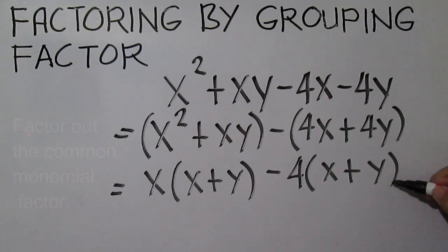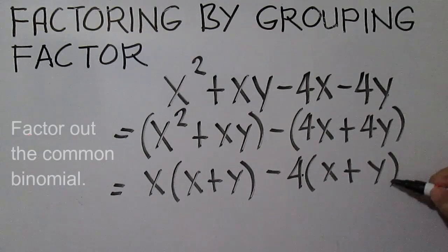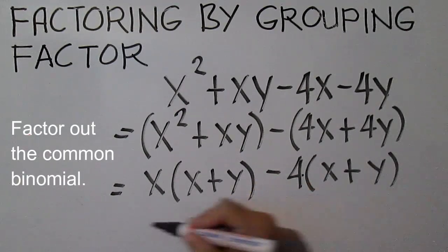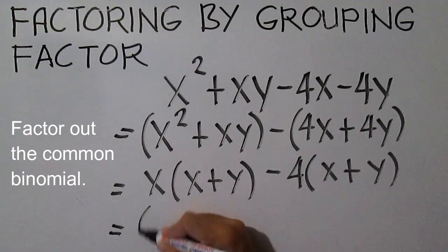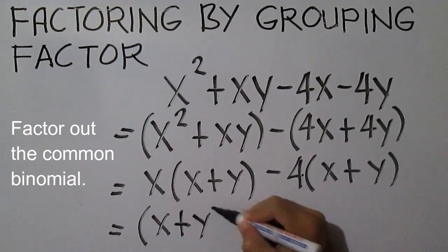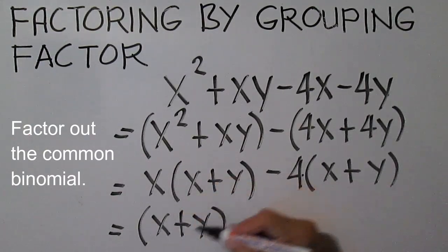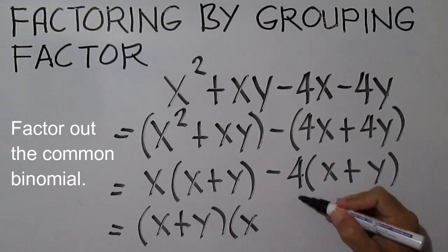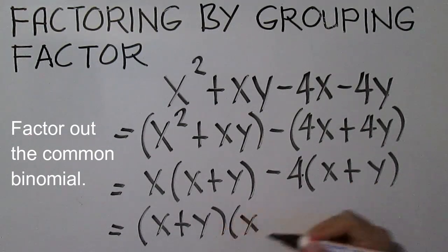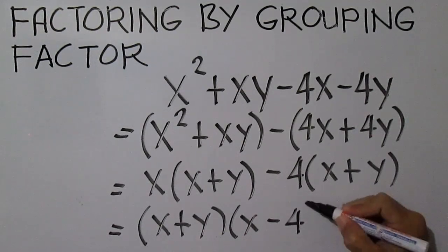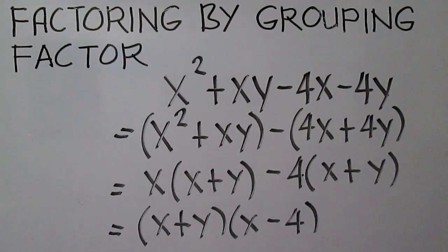Note that we have a common binomial. Factor out the common binomial, the quantity X plus Y. Divide each term by the common binomial. The other factor is X minus 4. The factors are X plus Y and X minus 4.